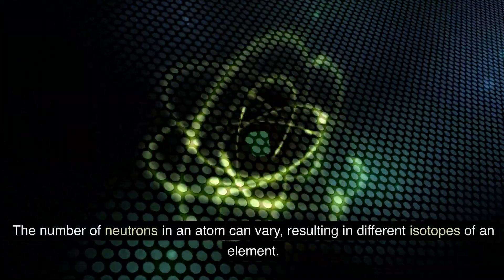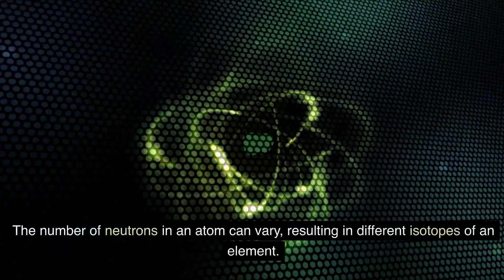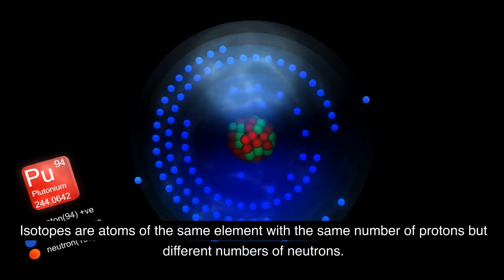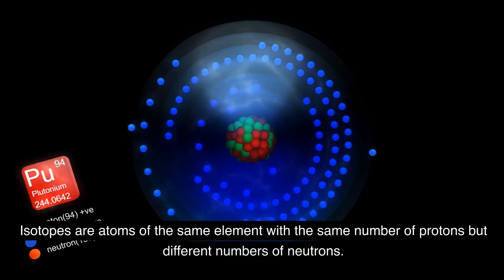The number of neutrons in an atom can vary, resulting in different isotopes of an element. Isotopes are atoms of the same element with the same number of protons but different numbers of neutrons.